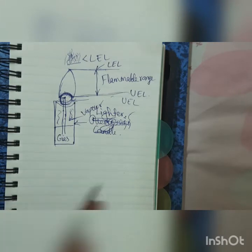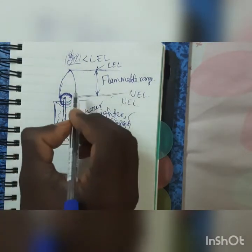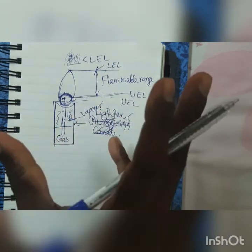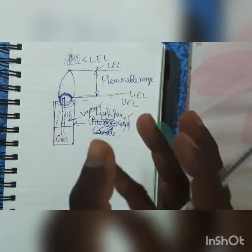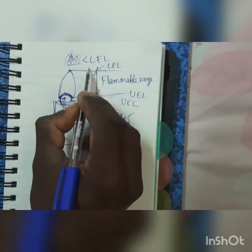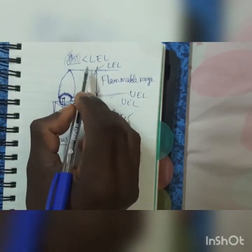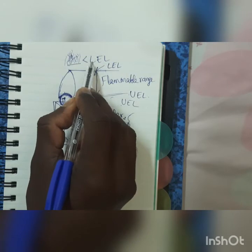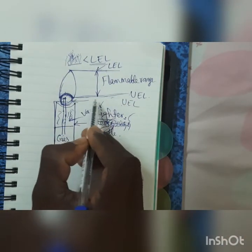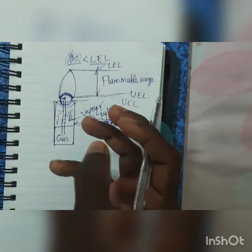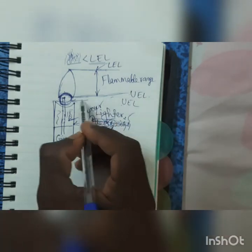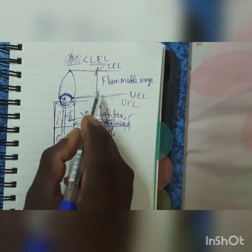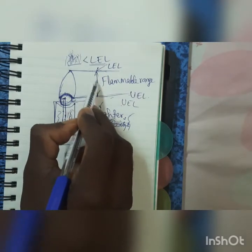LEL is the minimum concentration of a particular gas or vapour that will burn. This is LEL. UEL means the upper limit — the maximum concentration of gas that will burn. This is LEL and UEL — the difference between them is the flammable range.